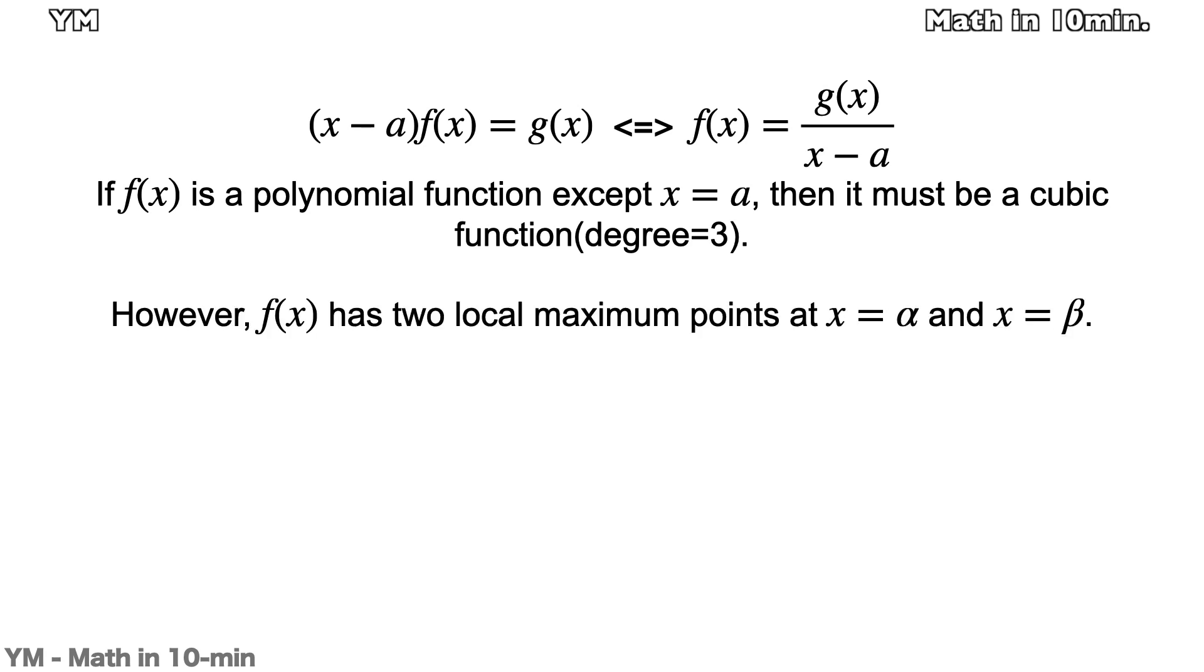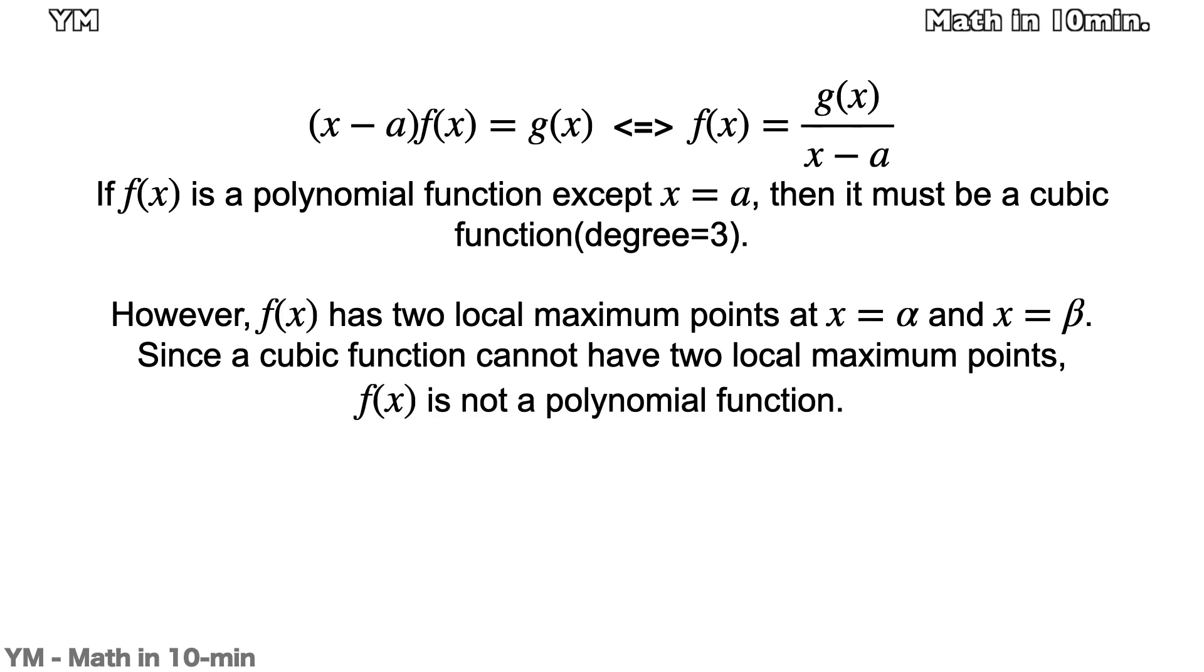But according to condition b, f(x) has two local maximum points. Generally, a cubic function cannot have two local maximum points. So f(x) is not a cubic function but a rational function.